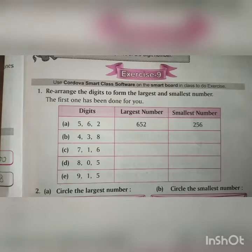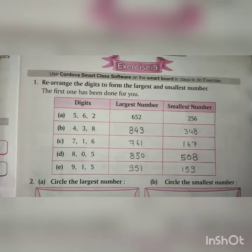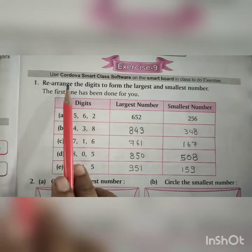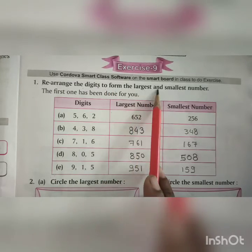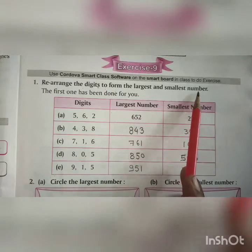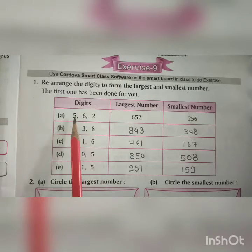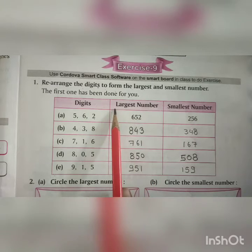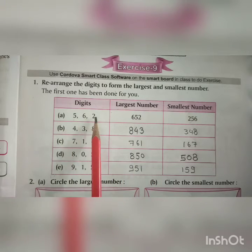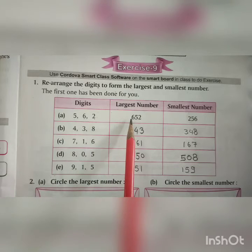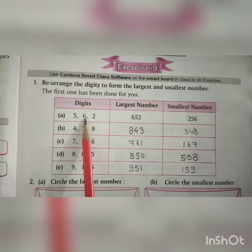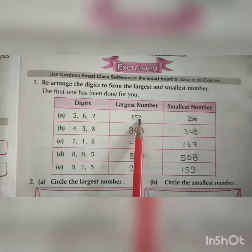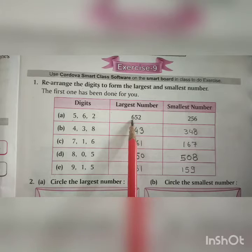Now let's do the exercise. Question number 1: rearrange the digits to form the largest and the smallest number. Given digits are 5, 6, 2. For the largest number, we arrange in descending order: 6, then 5, then 2. So the largest number is 652.